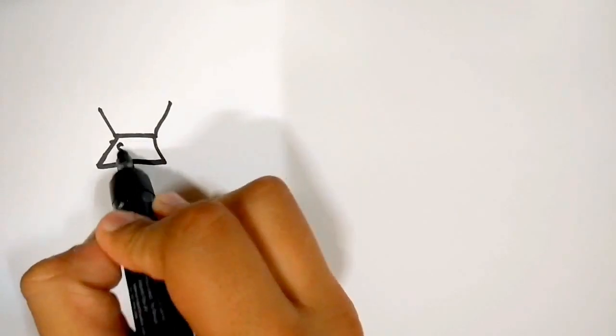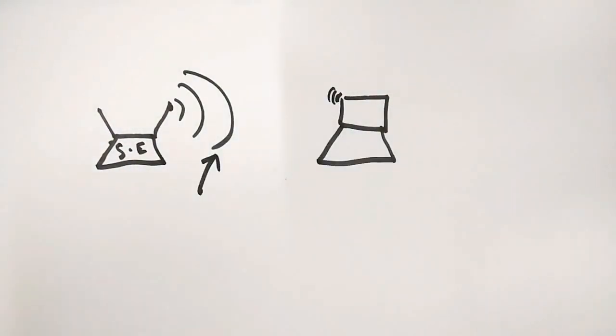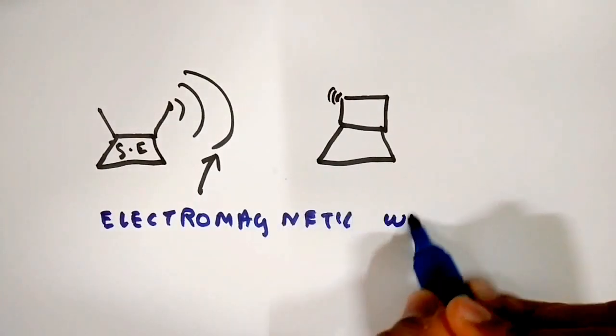Wi-Fi is essentially pulses of energy transmitted by a router to your device. These pulses of energy are electromagnetic waves.